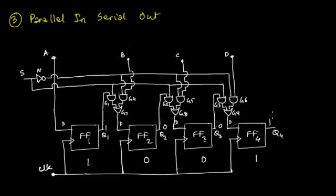Now we want to output the data from this register. As the name suggests, the data output takes place in serial fashion. Whenever you need an output from this register, you need to keep line S at logic 1.